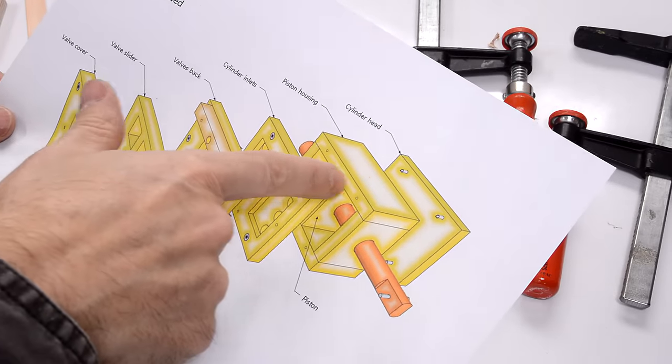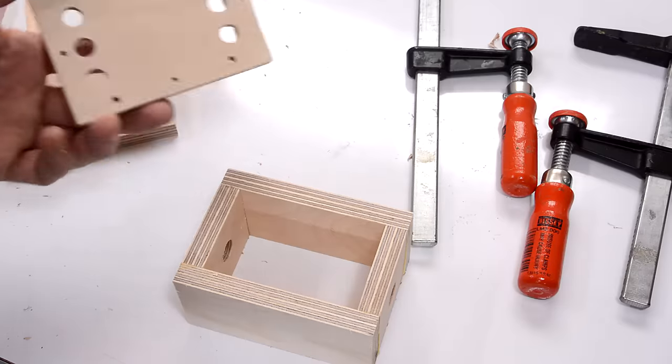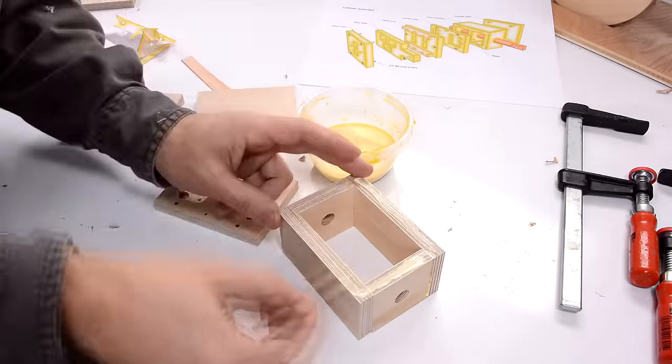Now in the plans I have this layer screwed onto the piston housing. But I'm pretty confident this is gonna work because I'm building it the second time around. So I'm just gonna glue that on.